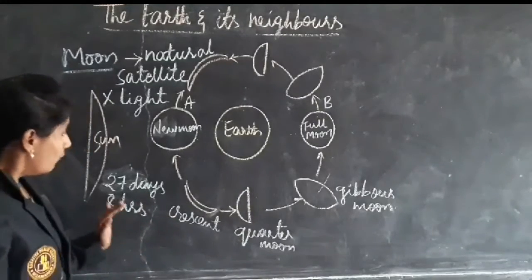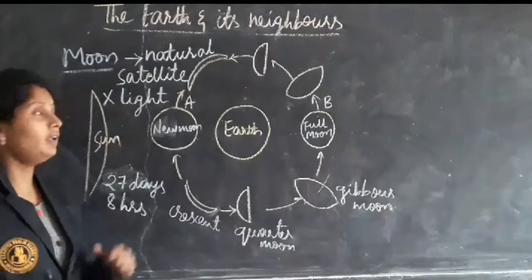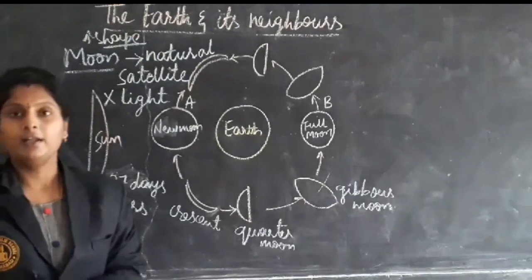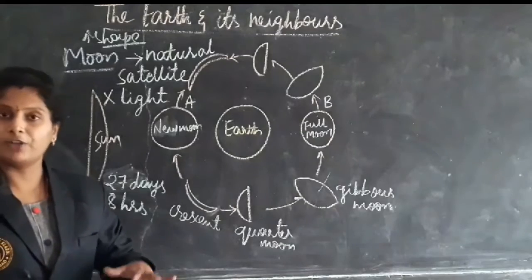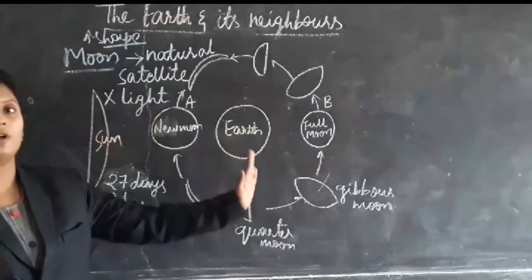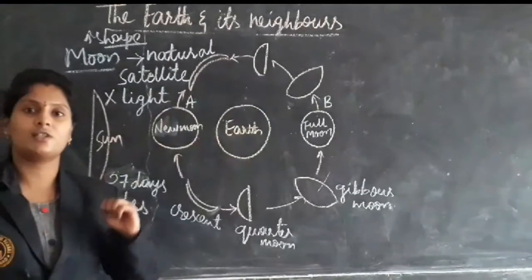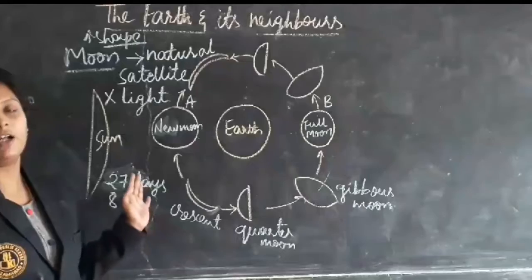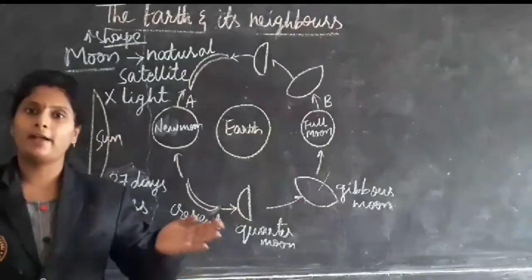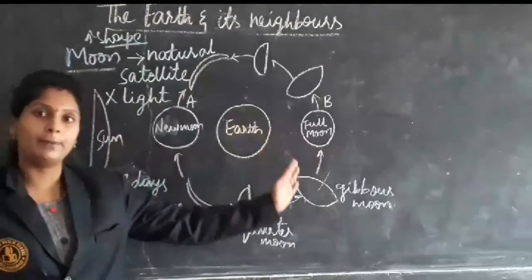Depending on its position, we see different shapes of the moon daily. We are able to see those shapes with the help of sunlight only — whatever sunlight is falling on the moon, those shapes only we are able to see. As it revolves around the earth from the 1st day to 15th day and again 15th to 30th day, the shapes of the moon will be different.